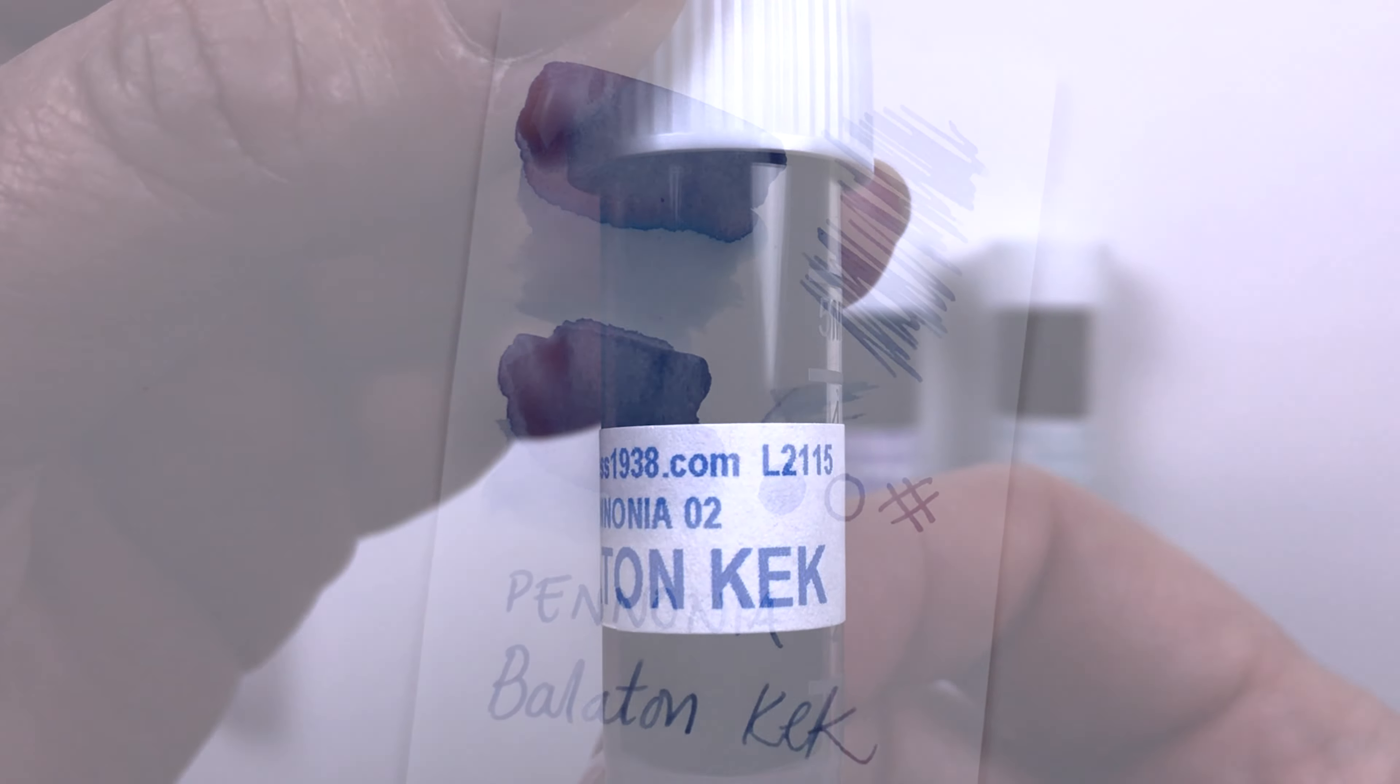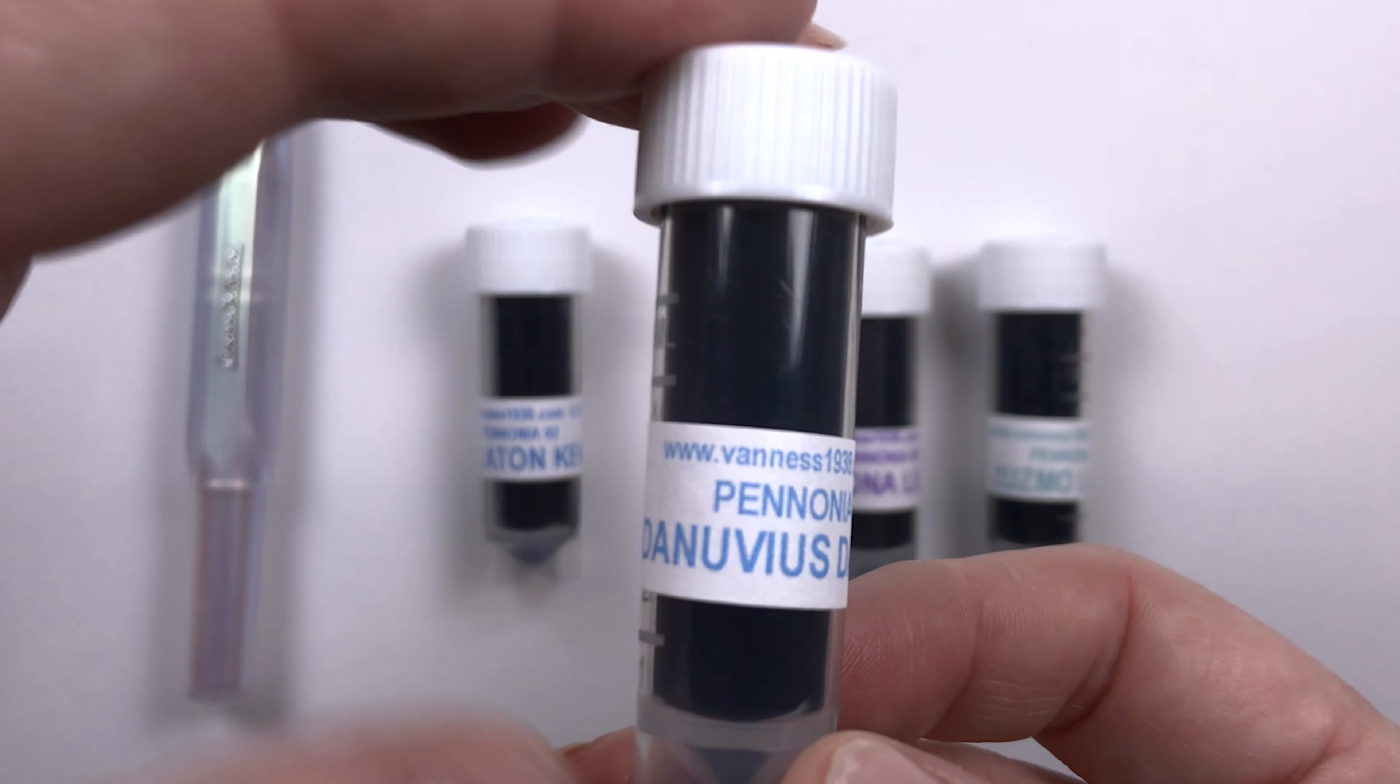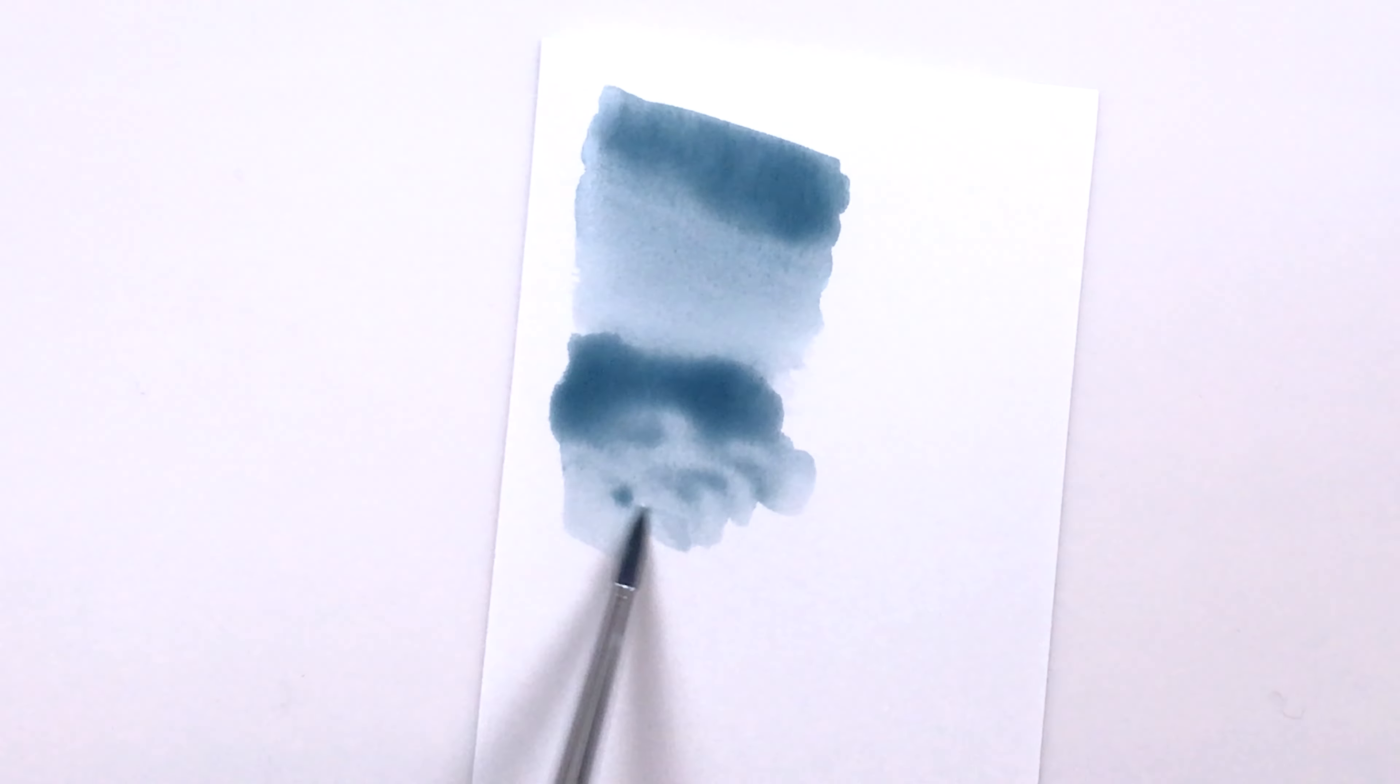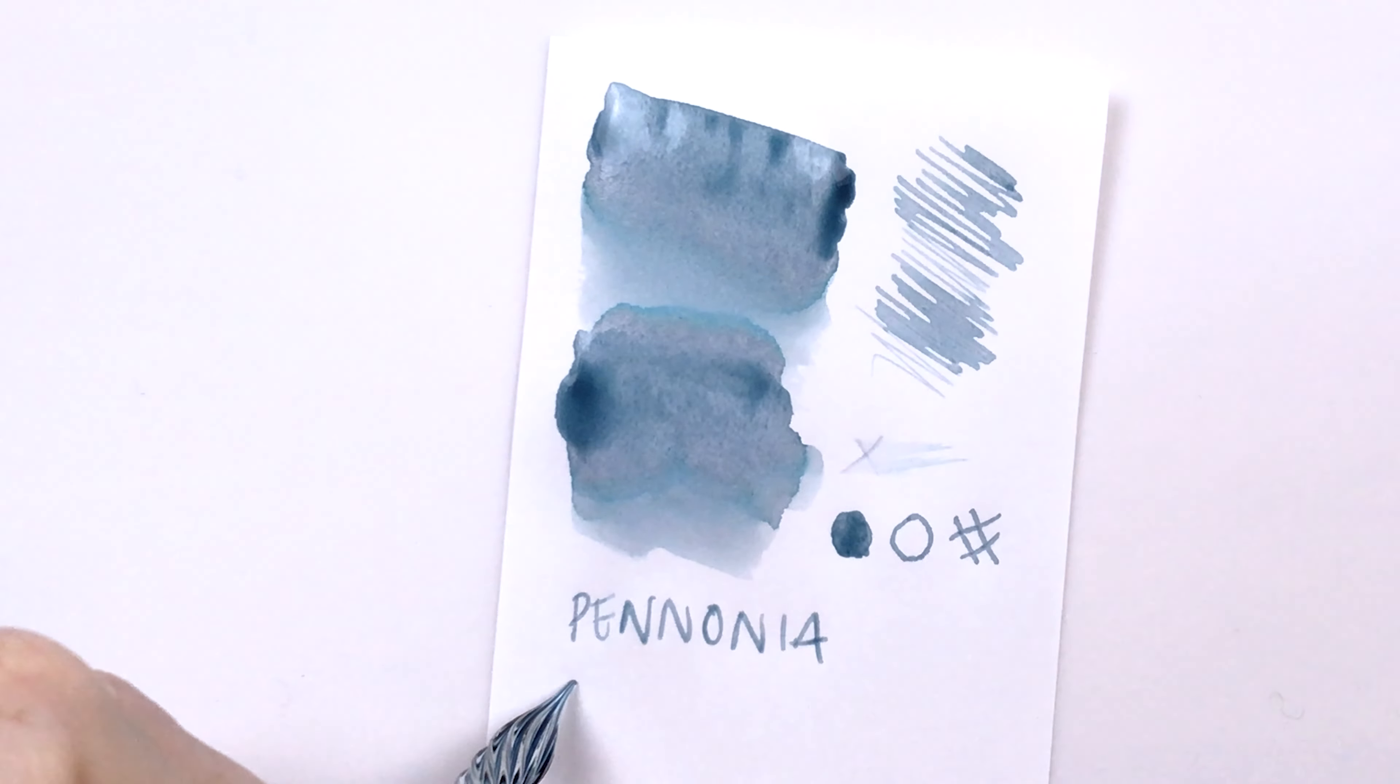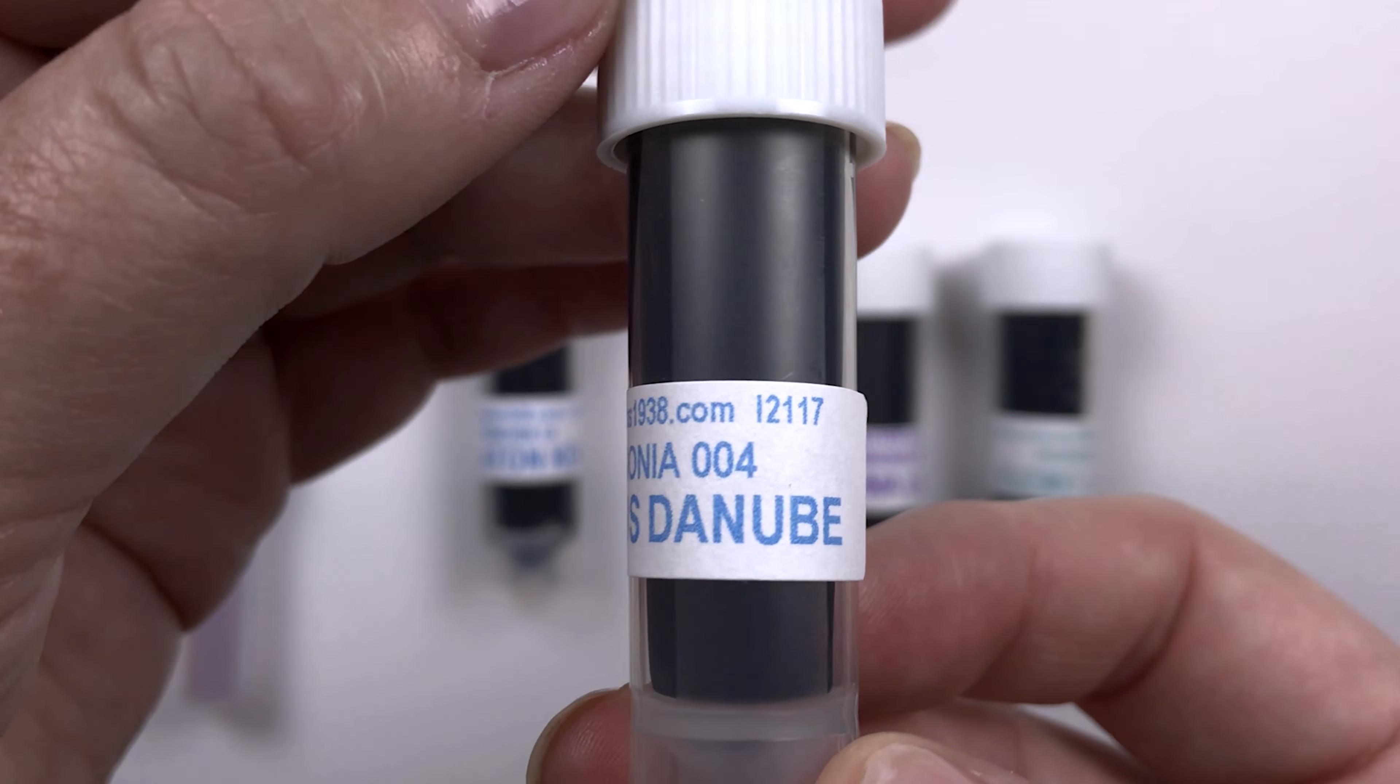So here we have a collection of Pennonia inks and these are really interesting actually. They are multi-shading inks or multi-chromatic and so as they dry you can see these changing colors. All of these have that beautiful shift from the initial color into a bunch of other colors.